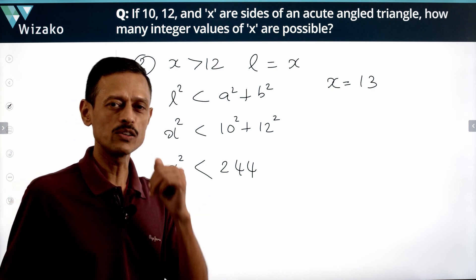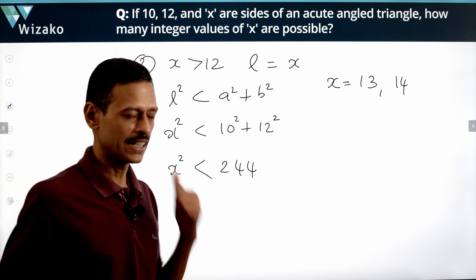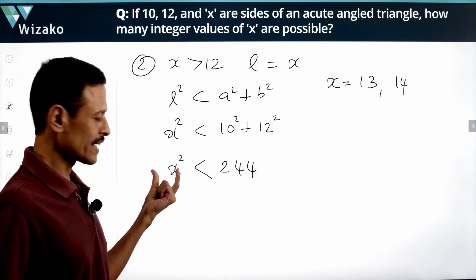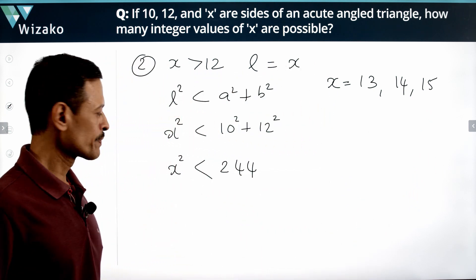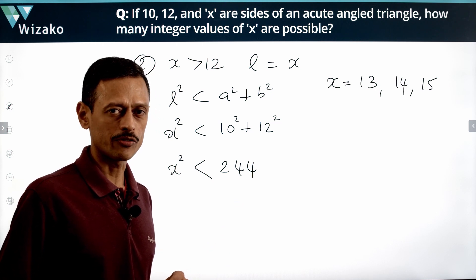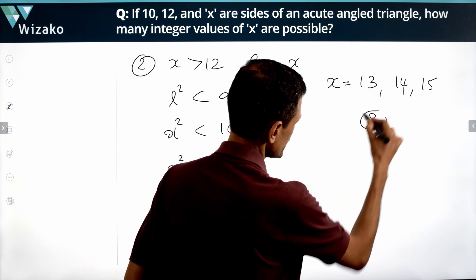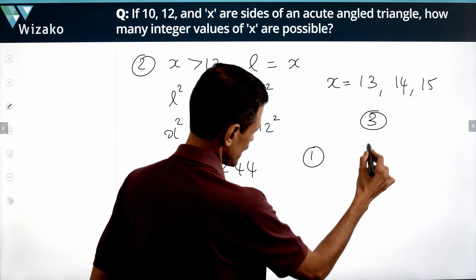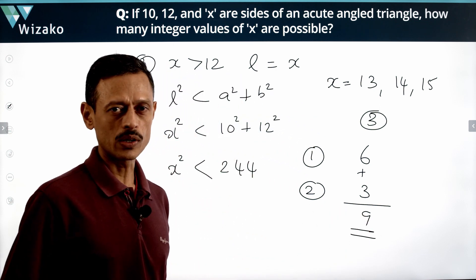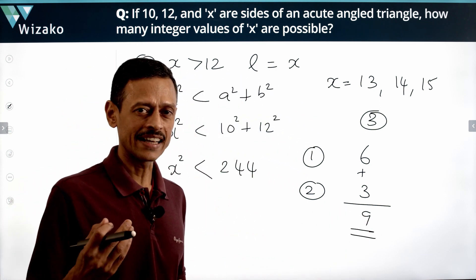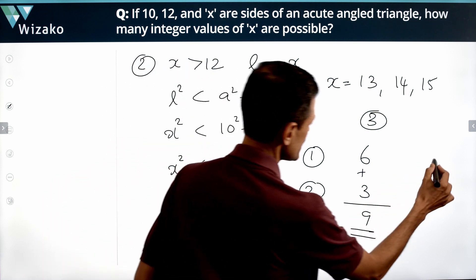Continuing: 15² = 225, which is also less than 244, so 15 works. But 16² = 256, which is not less than 244, so 16 does not work. So Scenario 2 gives 3 values: 13, 14, and 15. From Scenario 1 we had 6 values, from Scenario 2 we have 3 values. In total, 9 integer values of x will make 10, 12, and x sides of an acute angle triangle. The answer is Choice C.